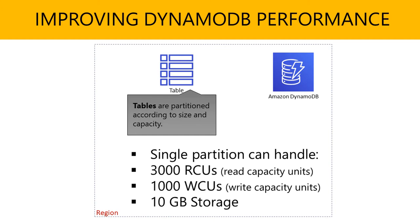Tables are partitioned within DynamoDB according to the throughput capacity and the size of the data you're storing. When you look at how DynamoDB tables are built and partitioned, a single partition can handle about 3,000 read capacity units, 1,000 write capacity units, and up to 10 gigabytes worth of storage.